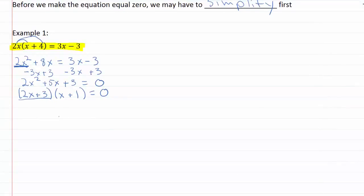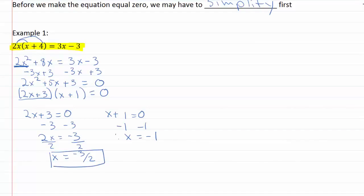I want to take each factor and set it equal to zero. Two x equals negative three minus sign, so minus one minus one x equals negative one. So here I have my two possible answers.